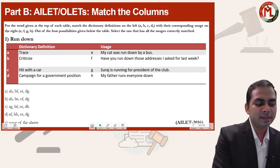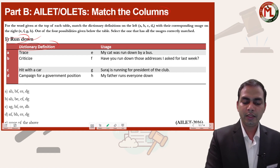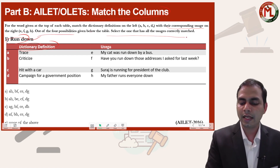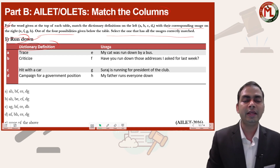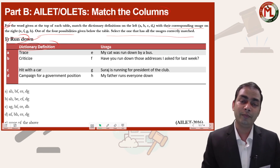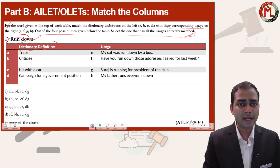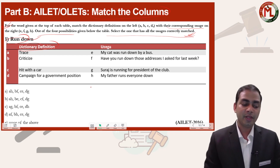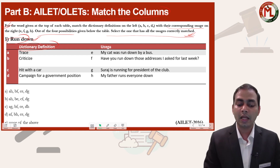As you can see on screen, the word is given at the top. You must match the dictionary definitions on the left with their corresponding uses on the right. Out of four possibilities given in the table, select the one that has all uses correctly matched. Students often neglect the instructions — sometimes the question may ask for negative meanings. So it is very important to read the instructions first. The easiest approach is to read each usage sentence carefully, because 'run down' has several meanings in English.